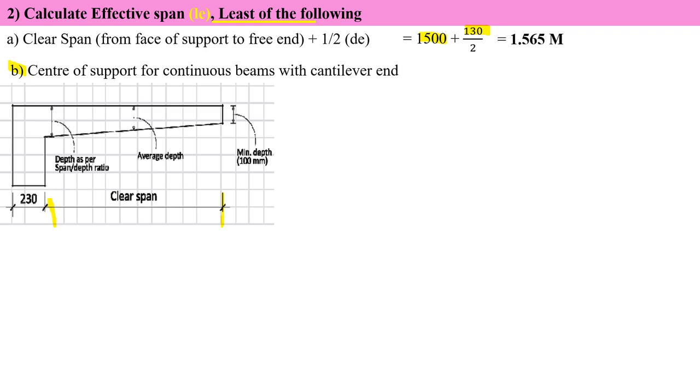This is the support of a beam. Center of the support to the cantilever end: half of the support, 230 divided by 2, plus clear span. I'm getting 1,615 but we need to take the least of the following. So least is 1.565 meter.